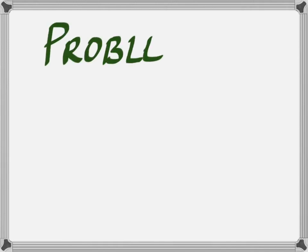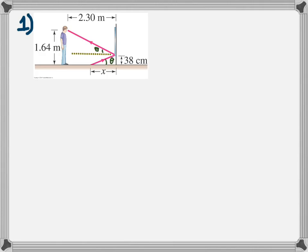Well, here are the answers to problems for number 12, reflection and refraction. Question 1 talks about a plane mirror and you have this person whose eyes are 1.64 meters above the floor. That's the picture now there. He is 2.30 meters away from it and the edge of the plane mirror is 38 centimeters above the floor.